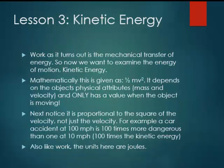So we've started to talk about work, energy, and power, and we want to look at the different types of energy involved. Work, as it turns out, is the mechanical transfer of energy. So now we want to examine the energy of motion, or what we call kinetic energy. Mathematically, the formula is given as 1 half mv squared. Notice it depends only on the physical attributes, mass and velocity, and only has a value when the object is moving. So the kinetic energy of any stationary object is zero.